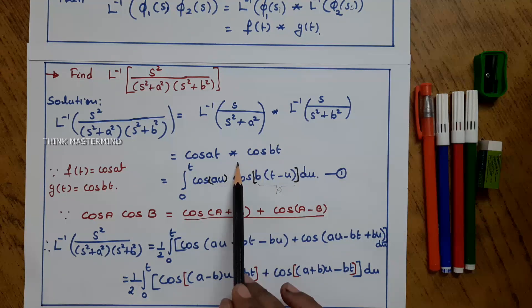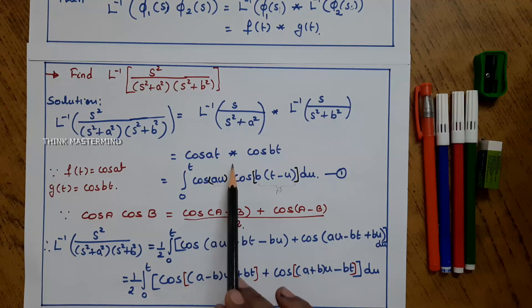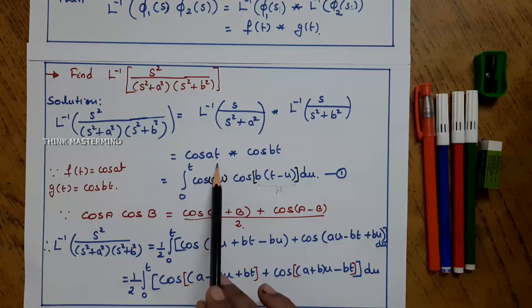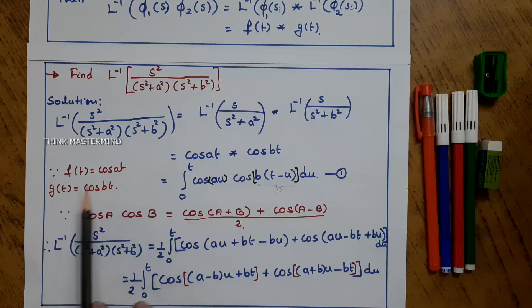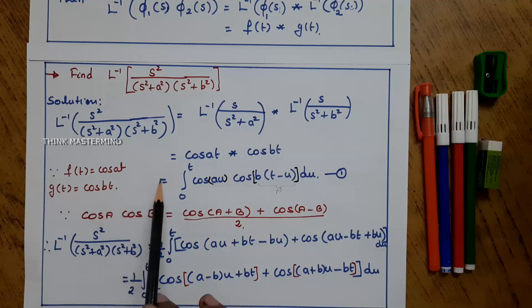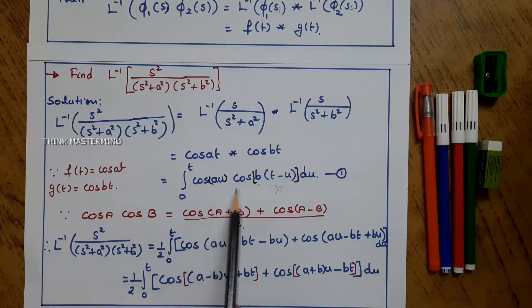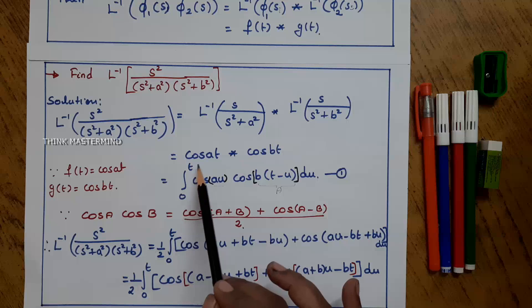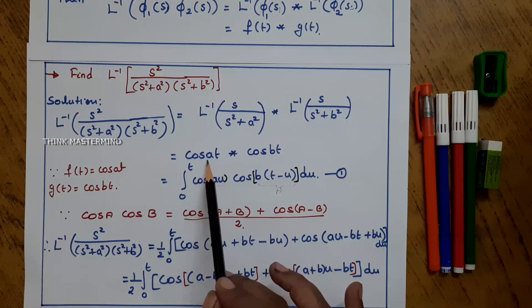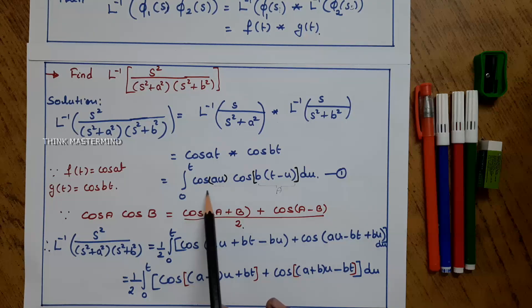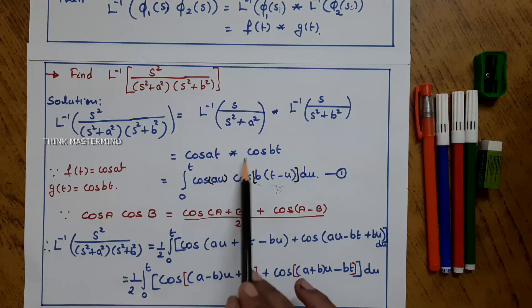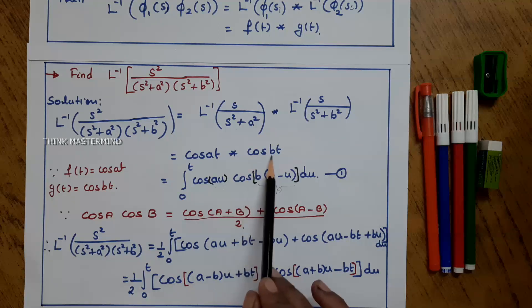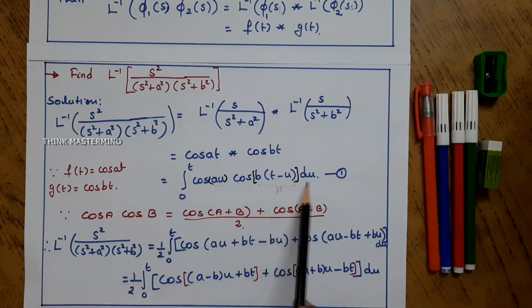Using the convolution of f(t) * g(t), here f(t) represents cos(at) and g(t) represents cos(bt). We have already seen the convolution theorem. From that, the integral is from 0 to t: instead of cos(at) I write cos(au), and instead of cos(bt) I write cos(b(t minus u)) du.